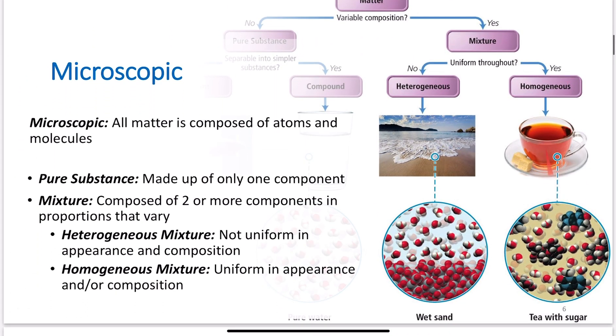Continuing on our microscopic view, again, all matter being composed of atoms and molecules, we can have different types of substances. We can have a pure substance, which is only made up of one component, or we can have a mixture. A mixture would be something that is made of two or more components, and the proportions may vary. Example shown here is like tea with sugar. Some people like tea with sugar, some people like it without. Some people that like it with, like varying amounts of sugar. It may have a different ratio of sugar in the sample, but it's still a mixture.